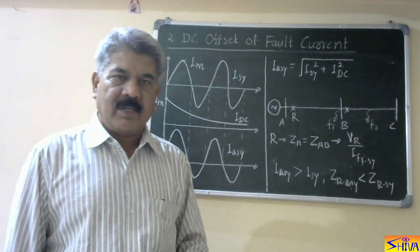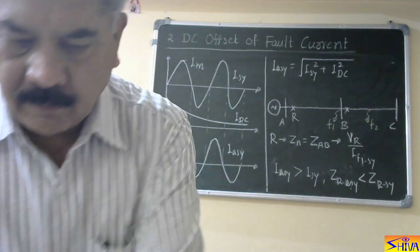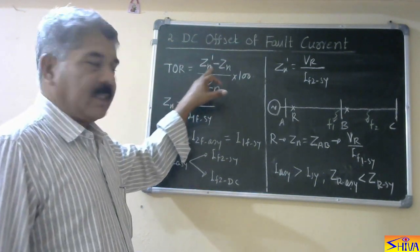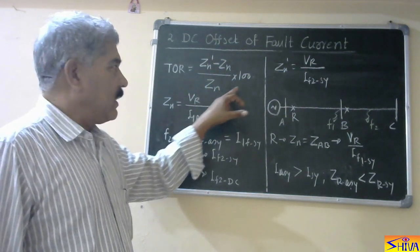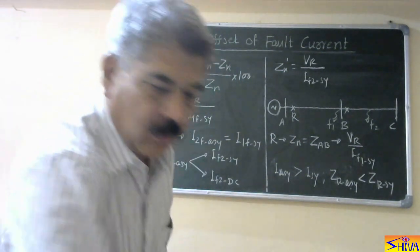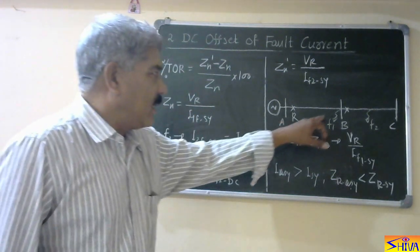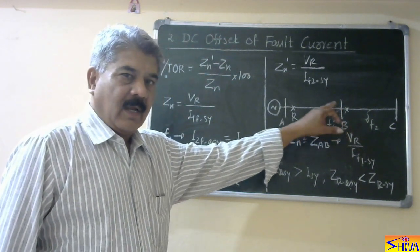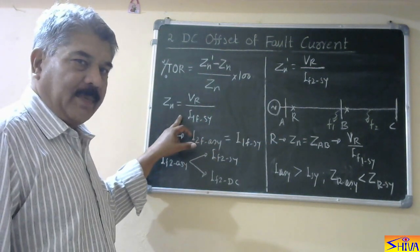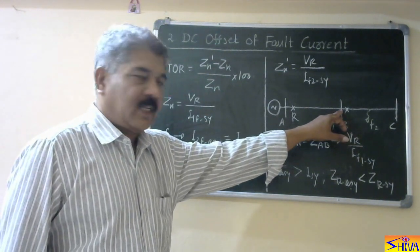Now let us find the equation for transient overreach due to DC offset of the fault current. Transient overreach is given by: (ZN_dash minus ZN) upon ZN, multiplied by 100 — this is the percentage transient overreach. ZN is Vr upon I_F1_symmetrical, where F1 is the fault at the extreme end with symmetrical fault current magnitude. So ZN, the reach or impedance setting, is Vr upon the symmetrical component of the fault current when the fault takes place at the extreme end.